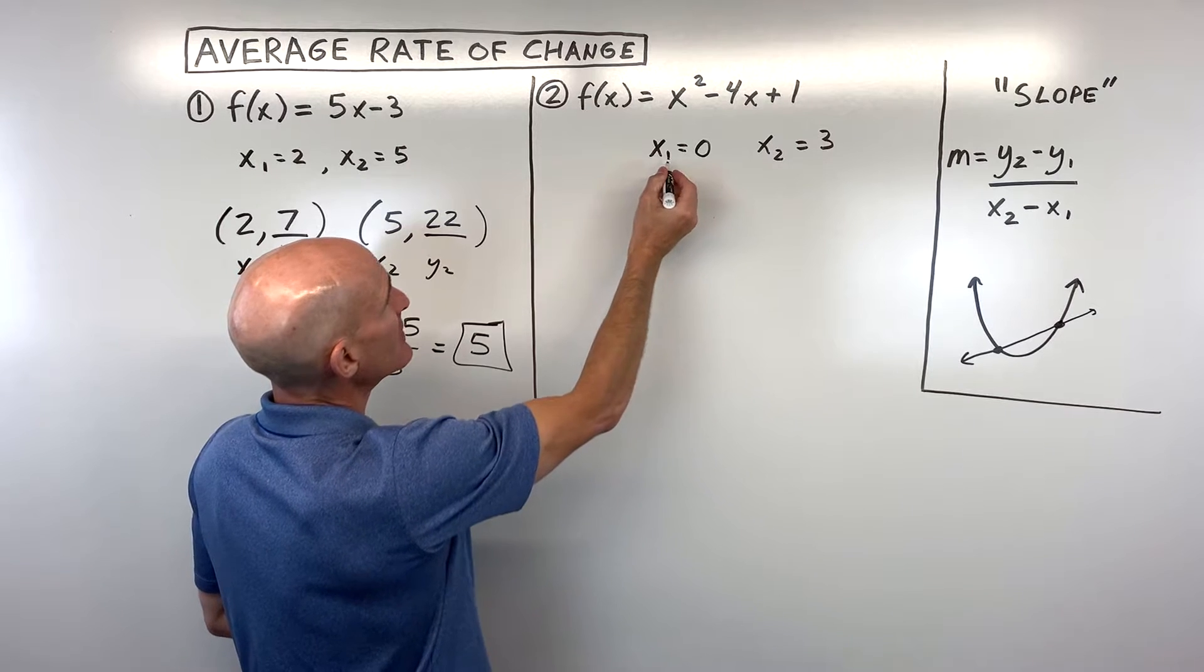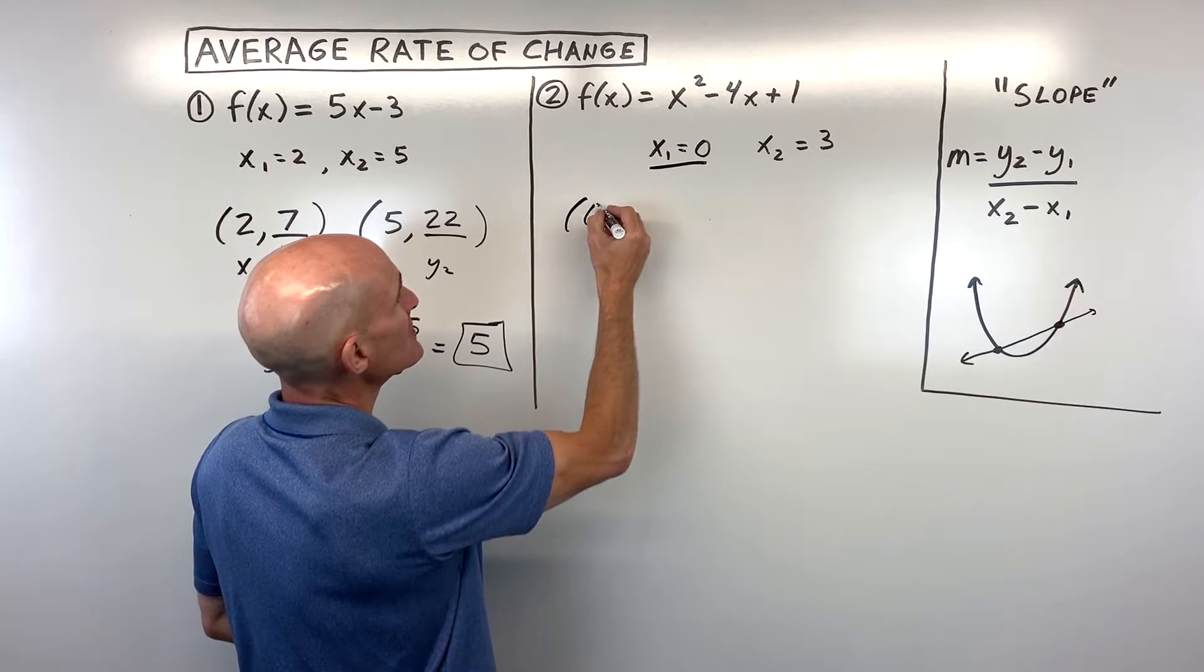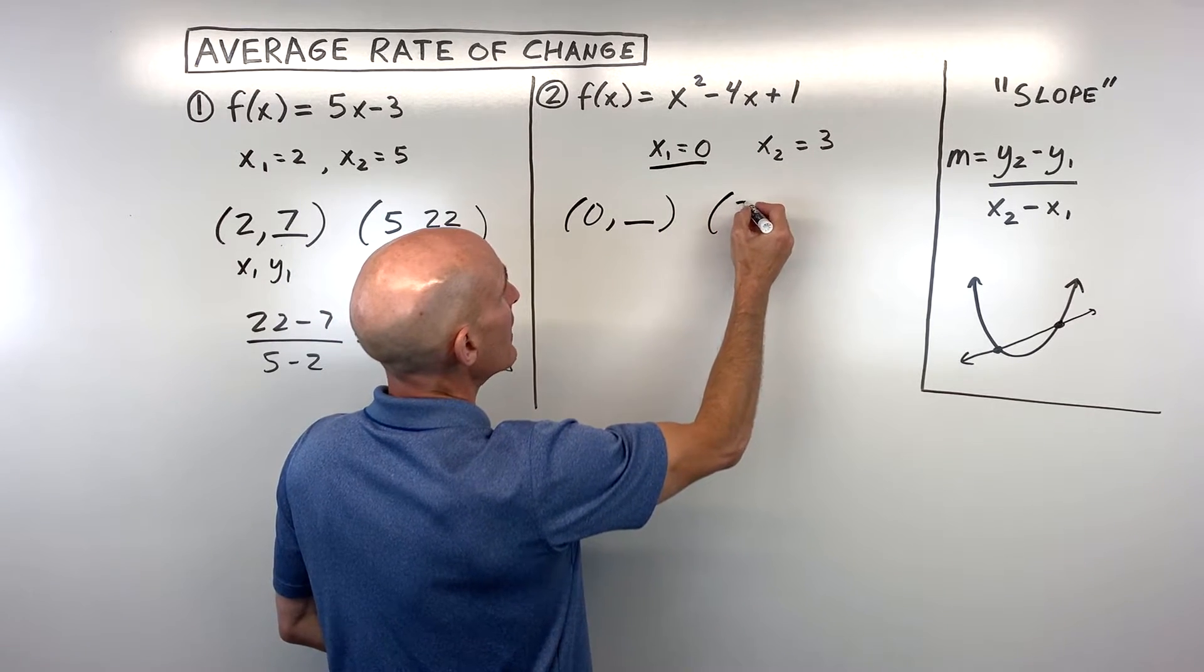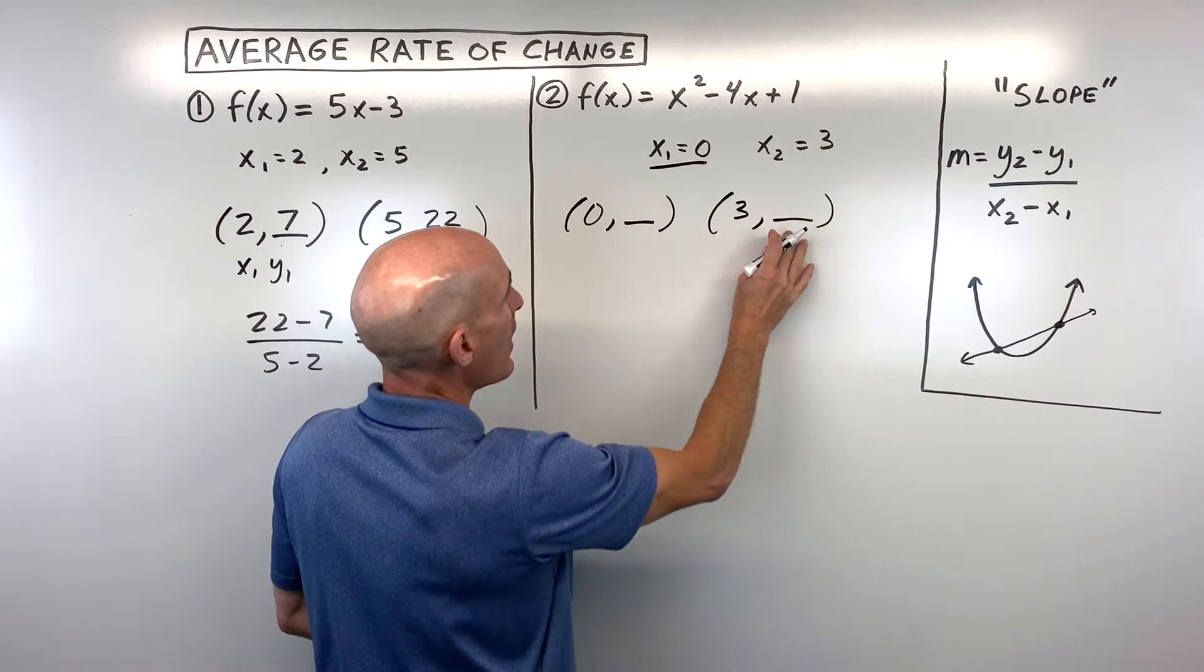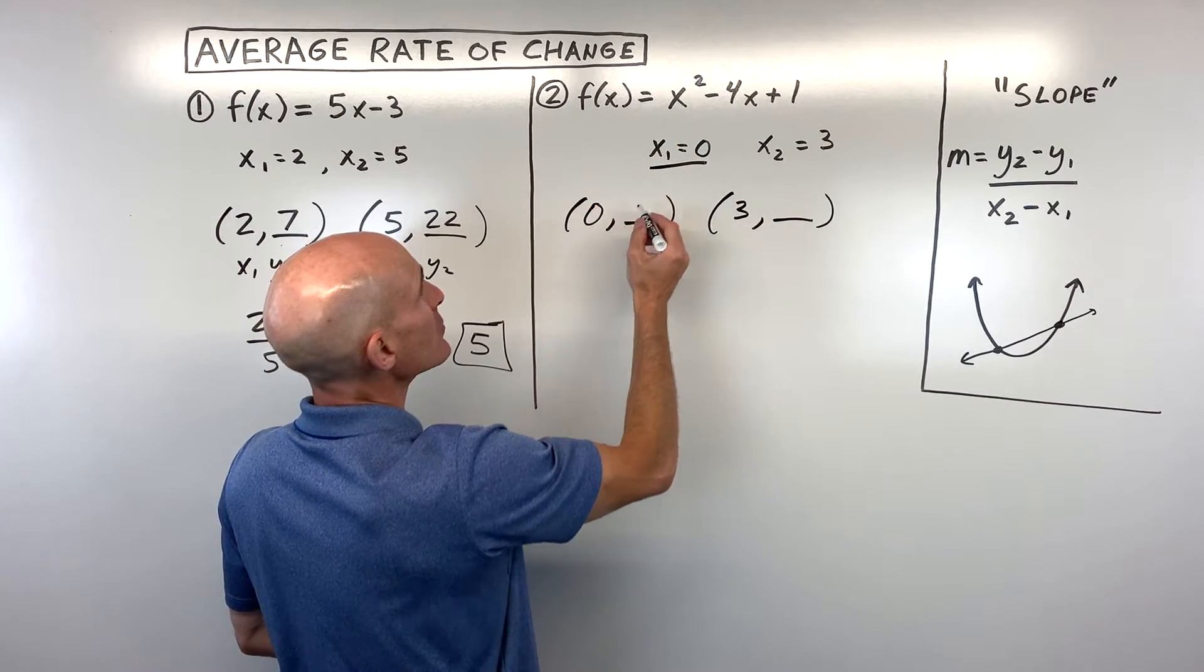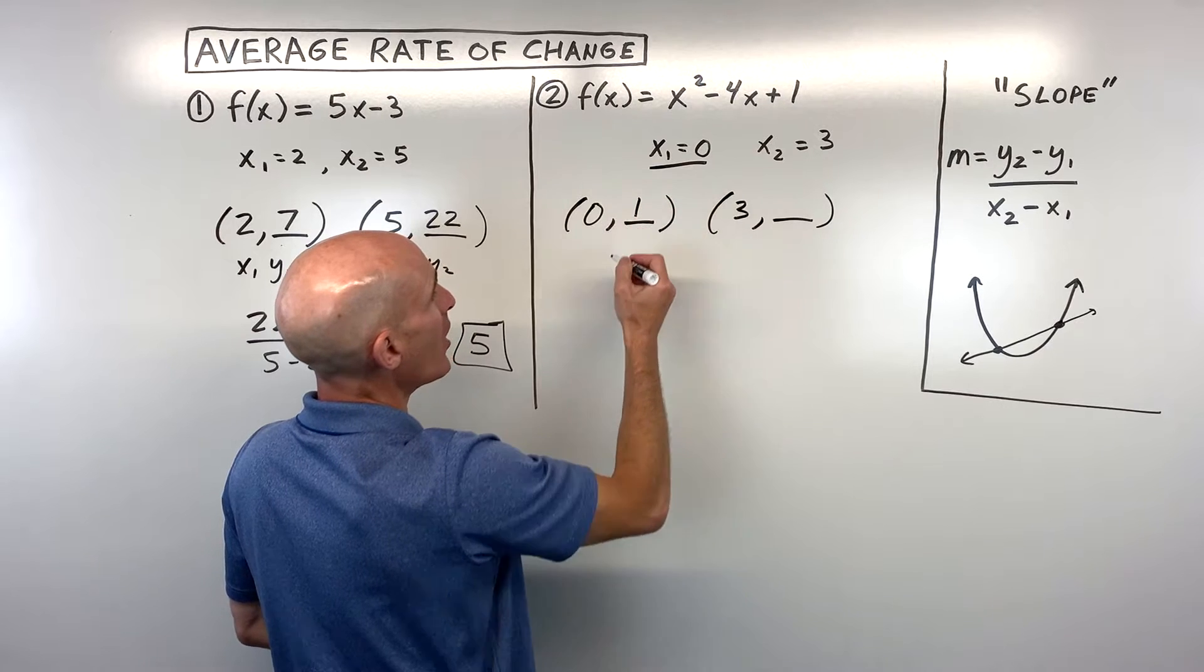Same idea. Let's look at the first point, the x-coordinate is 0, but we don't know the y-coordinate. The second one, the x-coordinate is 3, but we need to find the y-coordinate. So if we put 0 in, we get 0 squared, which is 0, minus 4 times 0 is 0, plus 1 is 1.